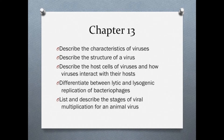You will also need to be able to differentiate between the lytic and lysogenic viral replication of bacteriophages and recognize important details regarding the steps of animal virus replication. Table 13.4 provides a comparison of bacteriophage and animal virus replication. You will need to define prion and describe what kind of diseases are caused by prions. You will find information regarding prions on page 399.